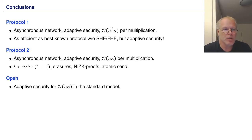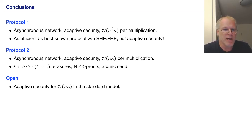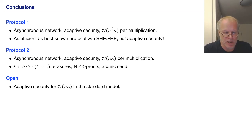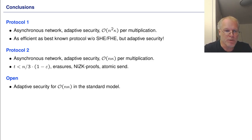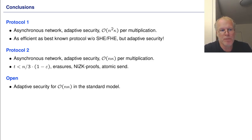Let me conclude. We have presented two protocols. The first protocol is for the asynchronous network, achieves adaptive security, and communicates N squared per multiplication — as efficient as the best-known protocol not using SHE or FHE, but with adaptive security. The second protocol is also in the asynchronous network with adaptive security and has linear communication complexity. Here we pay a price on the corruption threshold, so T is slightly smaller than N over 3. We need to assume secure erasures, non-interactive zero-knowledge proofs, and atomic send. It remains an open question to achieve adaptive security with linear communication complexity in the standard model.